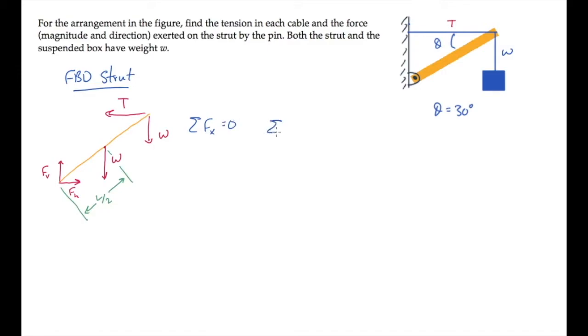Now we can apply the equations of equilibrium and solve for the unknowns. In the horizontal, or x direction, there are two forces: Fh and the tension T directed to the left in the negative, summing to zero. That tells us that the horizontal component of force exerted by the pin on the strut equals the tension T.